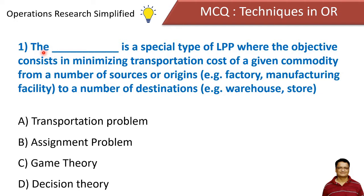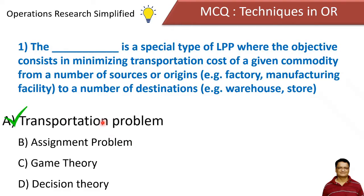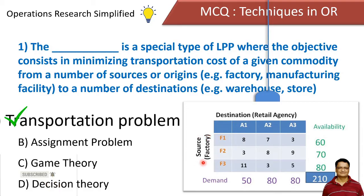The first question is: the blank is a special type of LPP where the objective consists in minimizing the transportation cost of a given commodity from a number of sources to a number of destinations. Options: transportation problem, assignment problem, game theory, and decision theory. Correct answer is transportation problem. In transportation problem, we have various sources and destinations, and we transport products from sources to destinations so as to reduce the total cost of transportation.